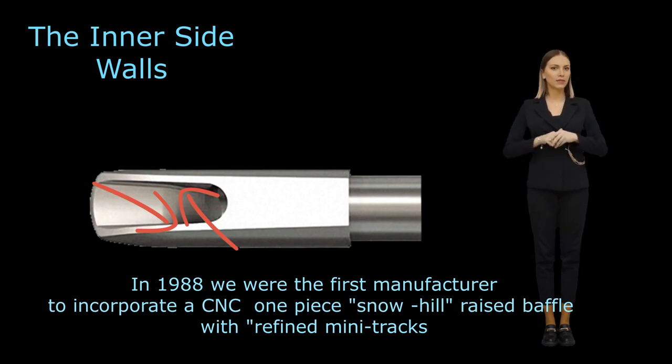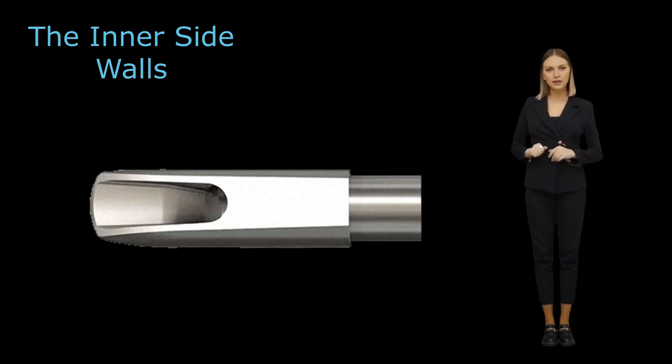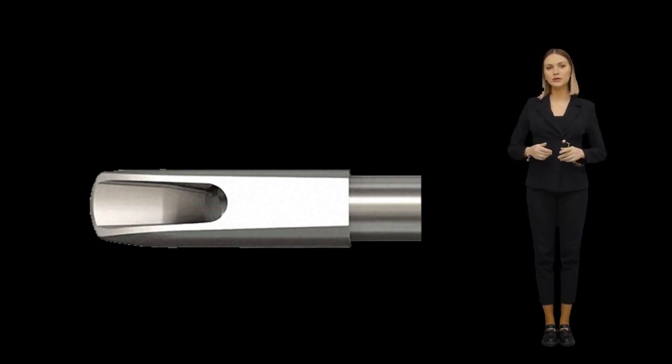The tip opening is the distance between the reed and the front rail. Usually a large tip opening will require more air, while a smaller tip opening requires somewhat less air.